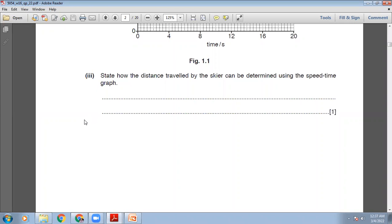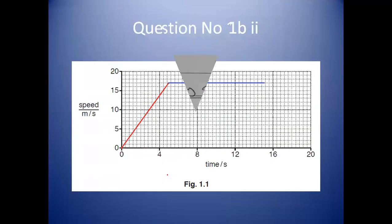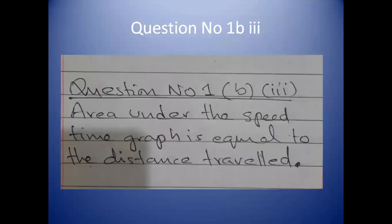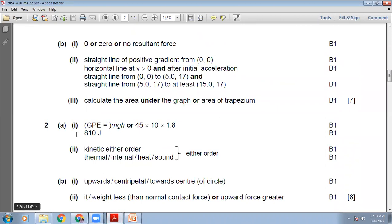The question says: state how the distance travelled by the skier can be determined using the speed-time graph. To find the distance from the speed-time graph, you need to find the area under the speed-time graph. The area under the speed-time graph equals the distance travelled. The marking scheme says: calculate the area under the graph or area of the trapezium.